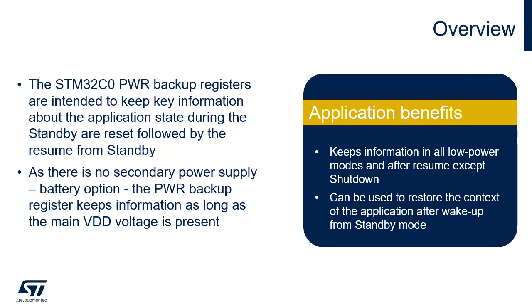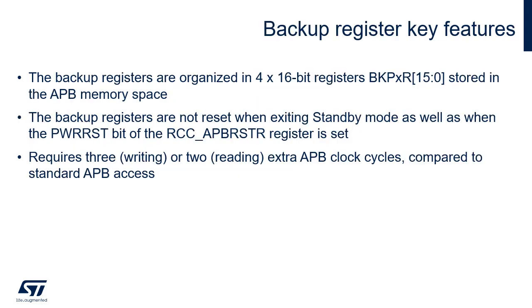As there is no secondary power supply such as a battery, the PWR backup registers keep information as long as the main VDD voltage is present. The backup registers are organized in four 16-bit registers stored in the APB memory space.